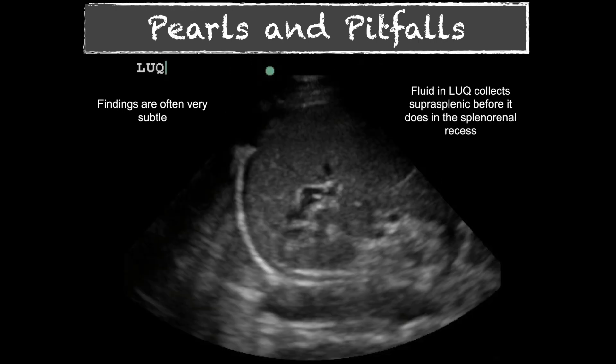Now let's look at the left upper quadrant, which is a little different from the right. In the right upper quadrant, the textbook shot is the hepatorenal space for fluid. In the left upper quadrant, the spleen really has to be bathed in fluid before you'll see fluid between the kidney and the spleen. The spleen is smaller, so it occupies less space and more fluid can collect there before you appreciate that space.